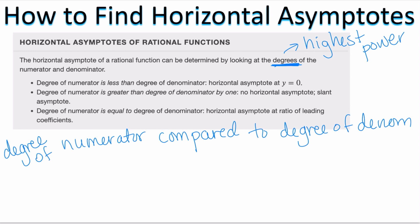When you compare two numbers, only three things can happen: either the top is bigger, the top is smaller, or the top and bottom are the same. When I say top is bigger, I mean the degree of the numerator is larger than the degree of the denominator. To make it easier to remember, I just teach my students: top is bigger, top is smaller, top and bottom are the same.